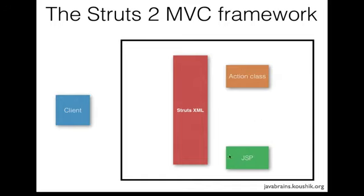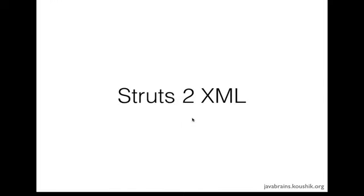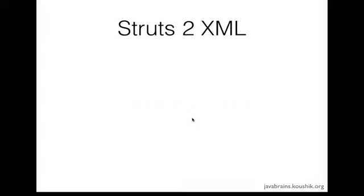Most of the interaction between these three components is primarily carried out by the controller, and we configure how those interactions happen using the struts.xml. The struts.xml is concerned with taking a client's request and finding out which action class needs to execute. This is similar to what we've seen in servlets — in servlets you have the web.xml, which has configuration about a particular URL and a particular servlet.